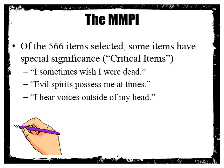There were 566 items selected for the original MMPI, and some have special significance — called critical items. For example, within the depression subscale of 12 to 15 questions, one item might be really important regardless of whether the person endorsed the others. An example is 'I sometimes wish I were dead' — this taps into suicidality, so regardless of how depressed a person reports, it's still something to follow up on in the clinical interview.